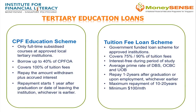Tertiary Education Loans. There are loan options to fund your child's tertiary education. For example, there is the Tuition Fee Loan Scheme for approved institutions, where the loan is interest-free during the period of study. There is also the CPF Education Scheme, which allows you to borrow up to 40% of your CPF Ordinary Account balance to pay for your child's local tertiary education at approved institutions. Your child will be required to repay the amount withdrawn, plus the interest you would otherwise have earned on your CPF savings. Repayment starts one year after the date of graduation or date of leaving the institution, whichever is earlier. Only full-time subsidised courses at approved education institutions are included under this loan scheme.